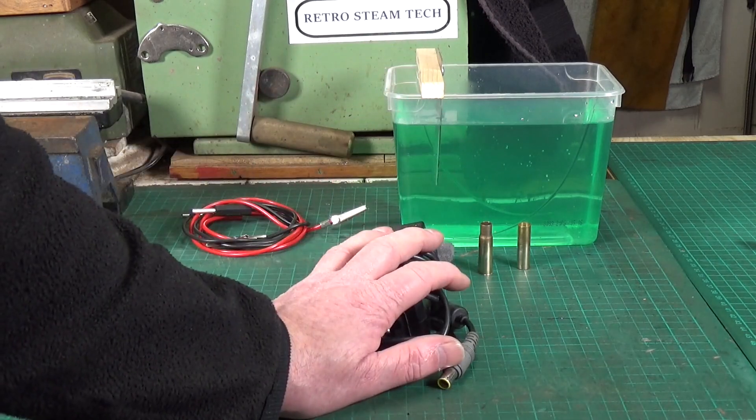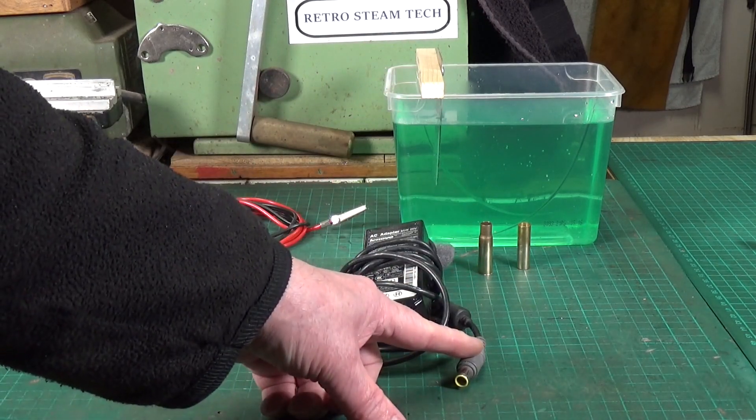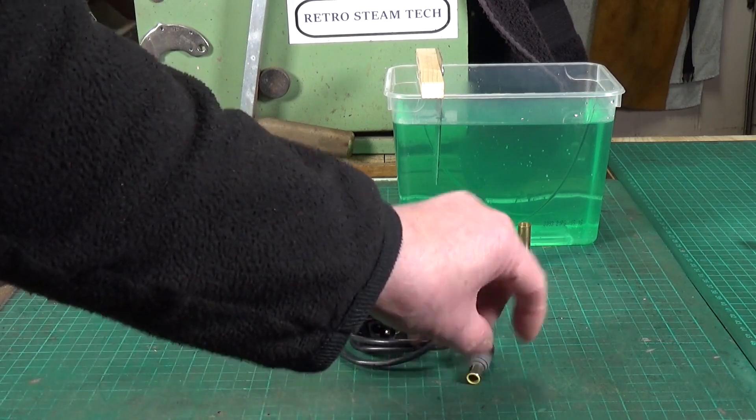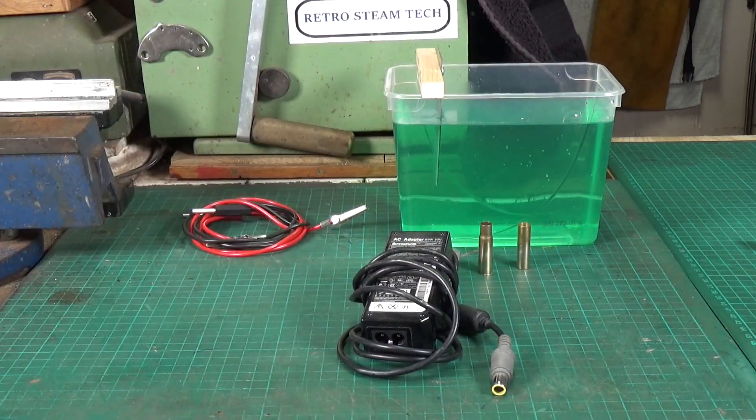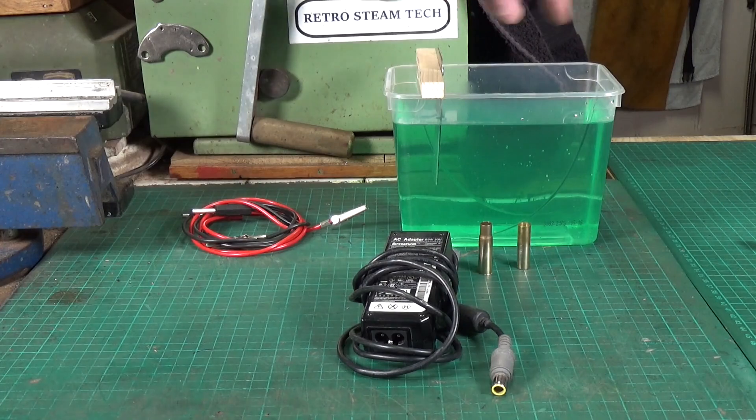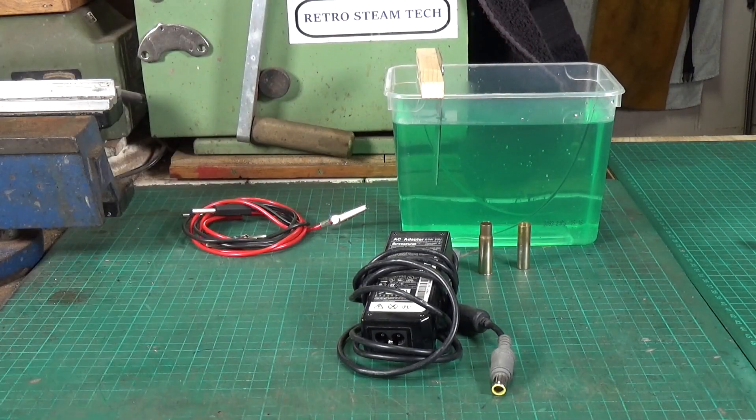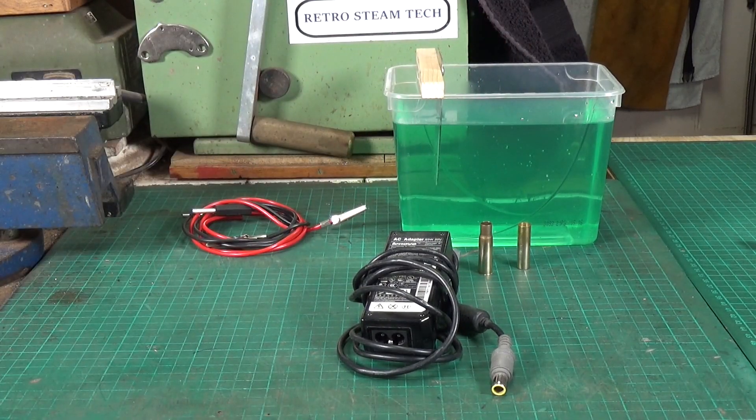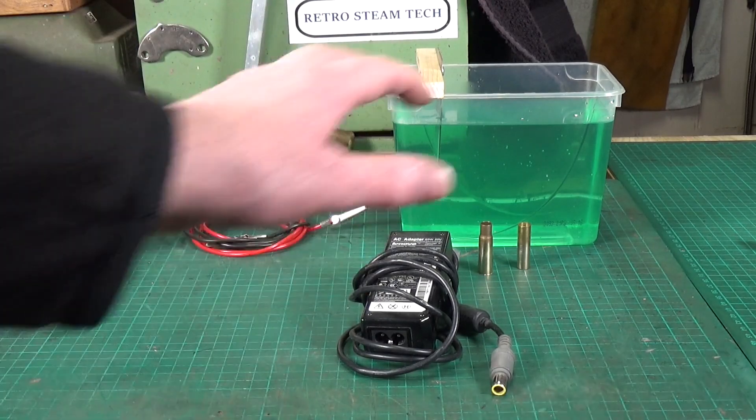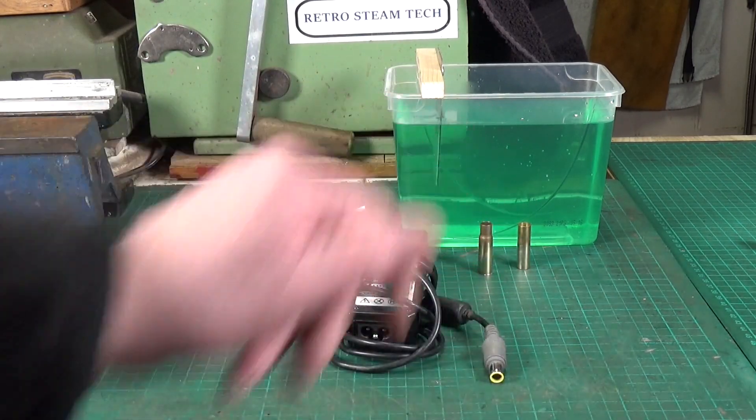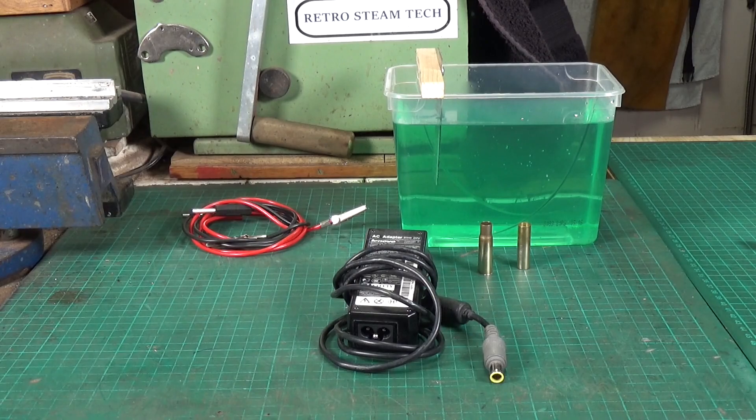If you've got an old laptop power supply you don't need to worry about the polarity. You just chop the original plug off and bare the wires off, because when you've got two plates in the solution it doesn't matter which polarity they are for creating the solution. An old laptop power supply would work well for creating the solution in the first place.